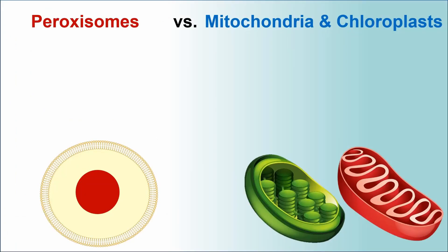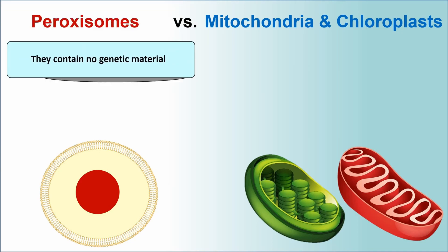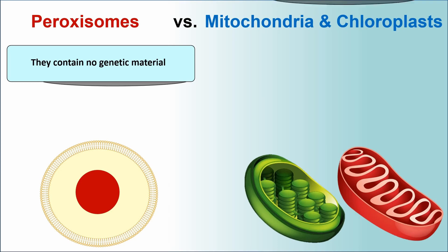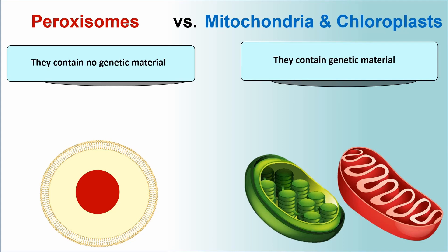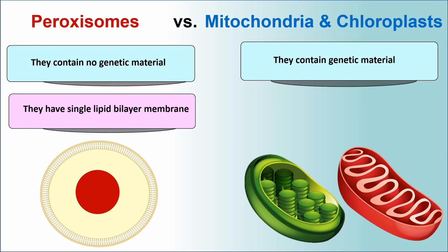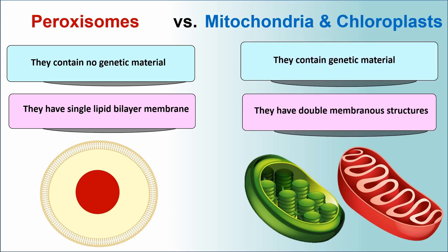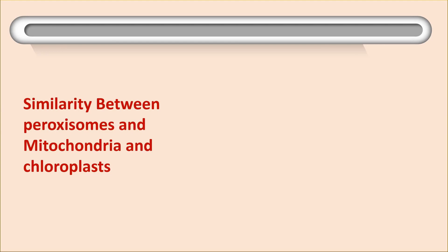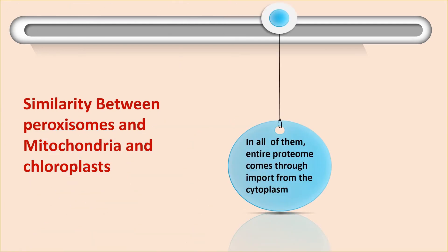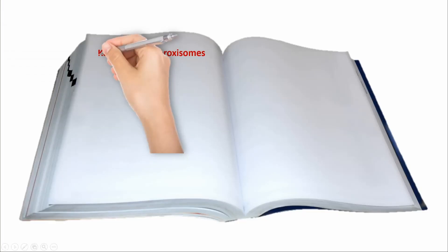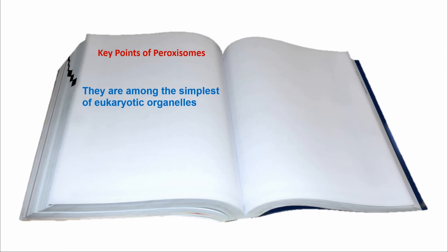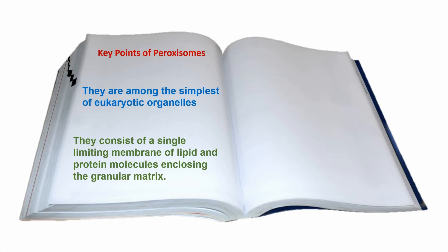Comparing proxysomes with mitochondria and chloroplasts: proxysomes contain no genetic material, but mitochondria and chloroplasts do contain genetic material. Proxysomes have a single lipid bilayer membrane, but mitochondria and chloroplasts have double membranous structures. Similarity: in all of them, the entire proteome is imported from the cytoplasm. Key points — proxysomes are among the simplest of eukaryotic organelles. They consist of a single limiting membrane of lipid and protein molecules enclosing the granular matrix.